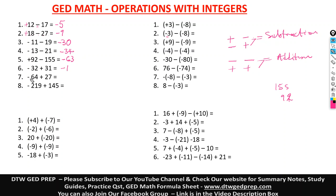Here we have negative 64 plus 27 — a negative and a positive, so we do subtraction. When we subtract, we get 37. And 37 takes a negative sign.